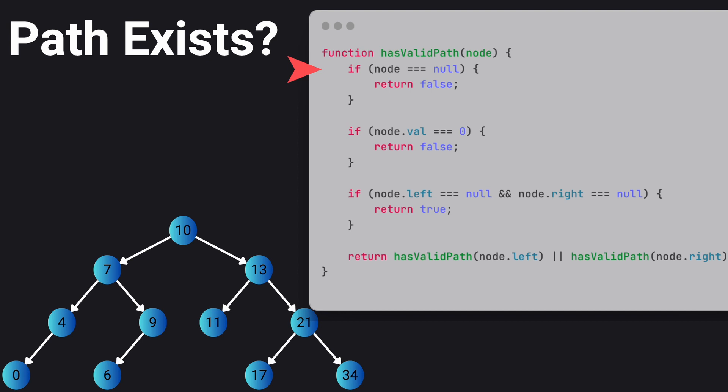If the current node is null, meaning it doesn't lead to any leaf, we return false. Another condition will be if the current node's value is 0, which means that the path contains 0, we will return false.